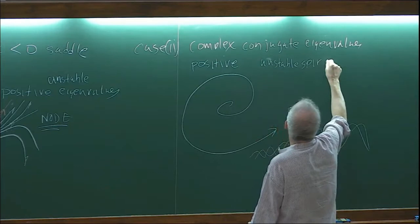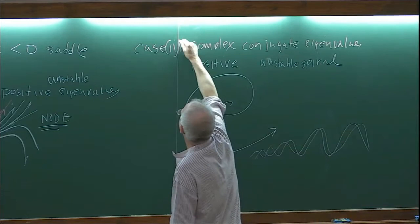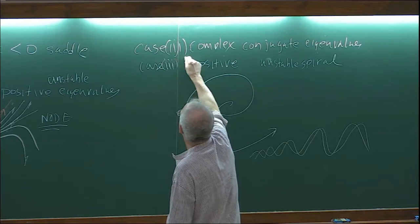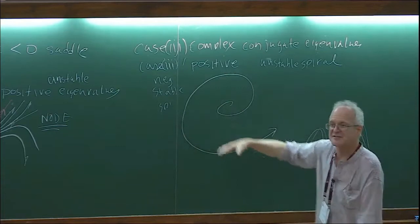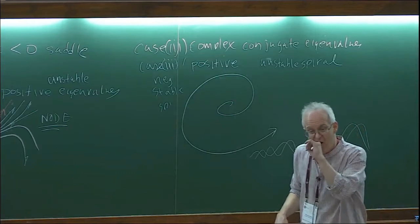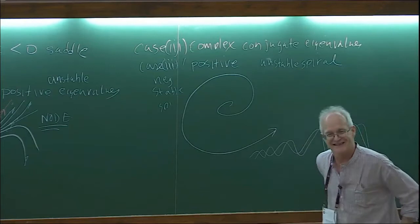Case three prime is complex conjugate eigenvalues with negative real part — that's called a stable spiral, and things go in the other direction, clockwise or counterclockwise.